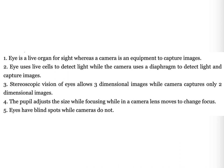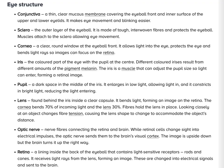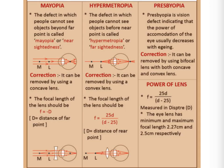For a far-sighted person, closer objects or distant objects cannot be seen clearly, meaning the image distance is negative. For a near-sighted person, distant objects cannot be seen clearly.